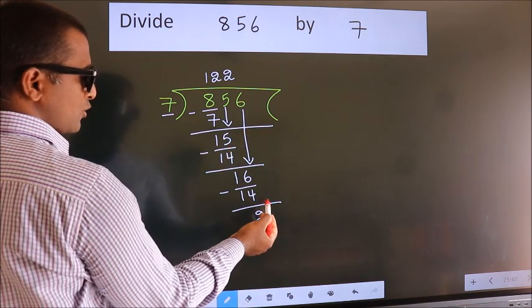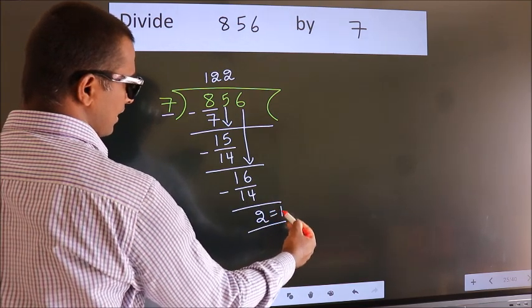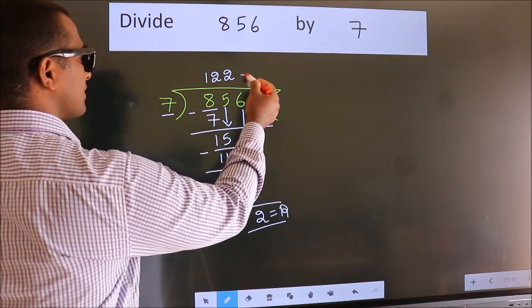No more numbers to bring down. So we stop here. This is our remainder. This is our quotient.